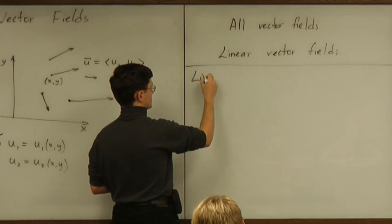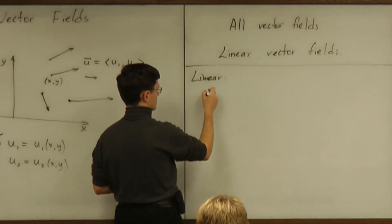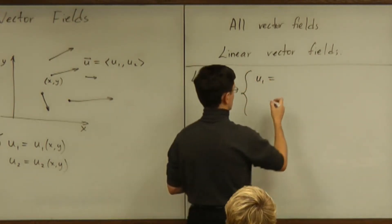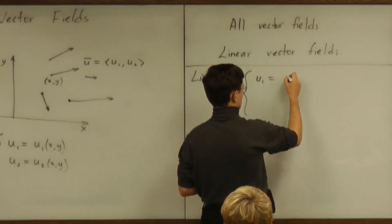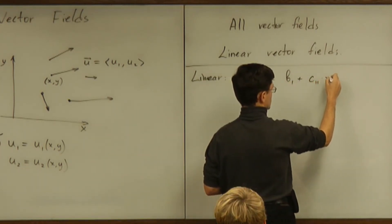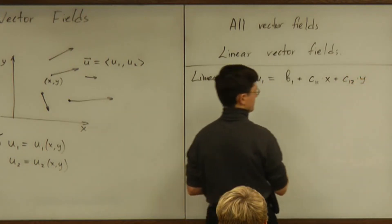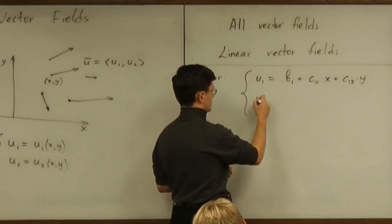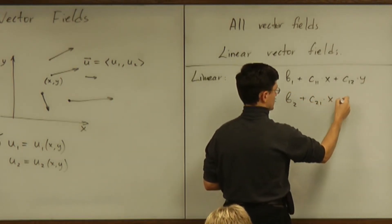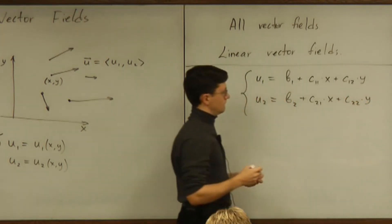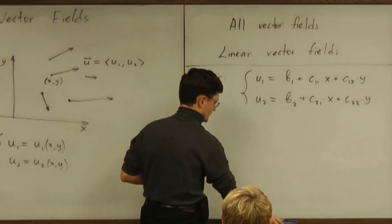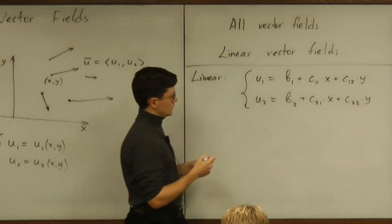Linear means u1 is a linear function of both x and y. So it's a constant — let's call it b1 — plus another constant c11 times x, plus another constant c12 times y. And u2 is some constant b2 plus c21 times x plus c22 times y. That's it — this is a general linear vector field, and now we have to understand everything about it.